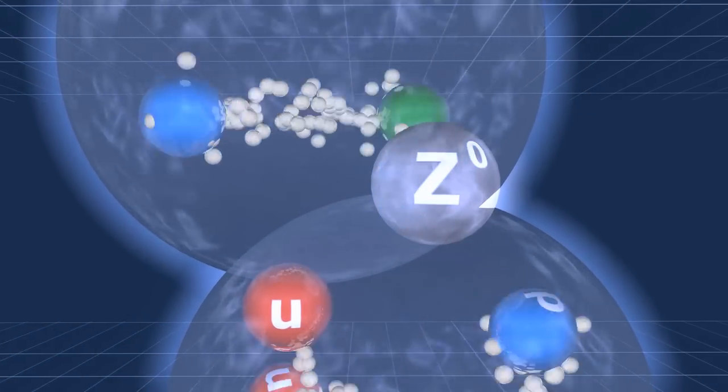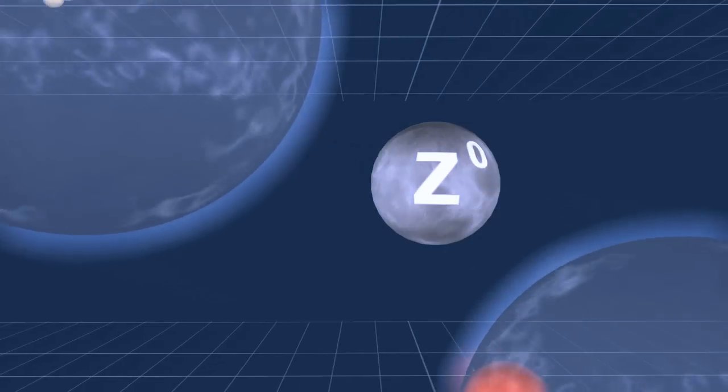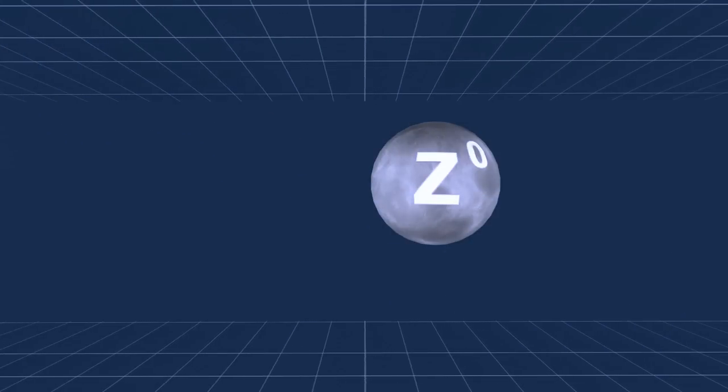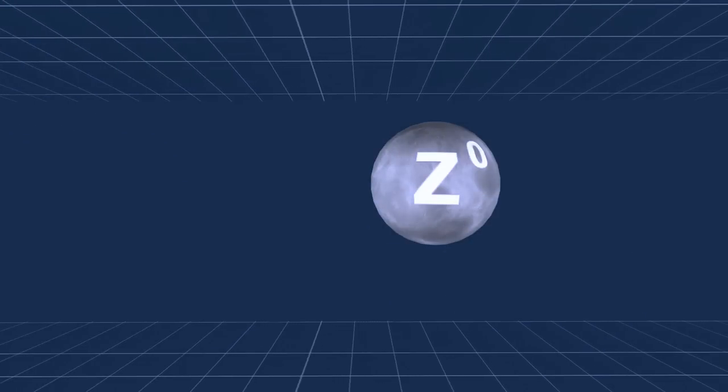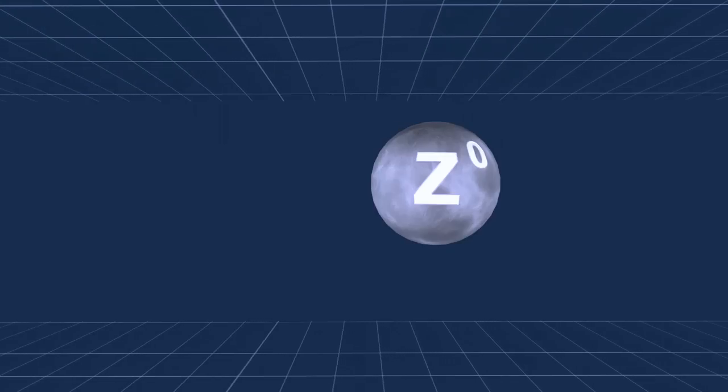In interactions like this, a Z0 particle is sometimes produced. It decays almost immediately. The Z0 particle can decay in several ways.